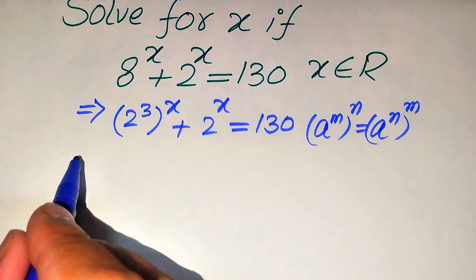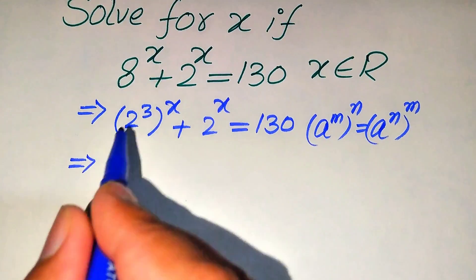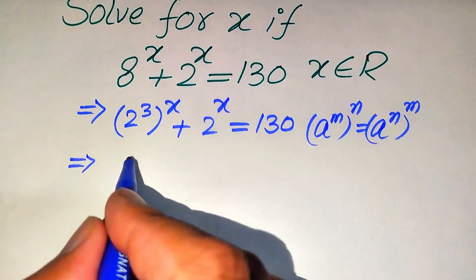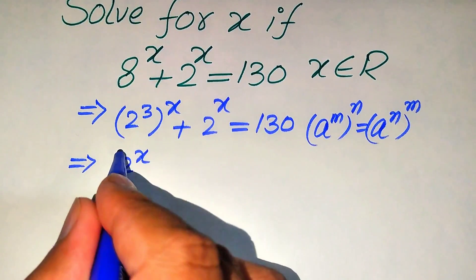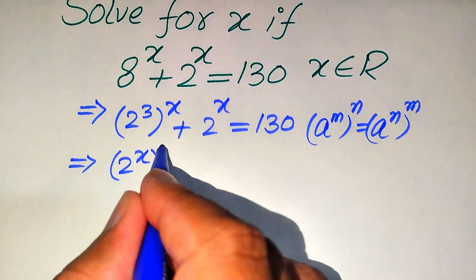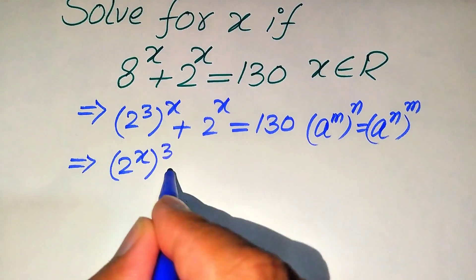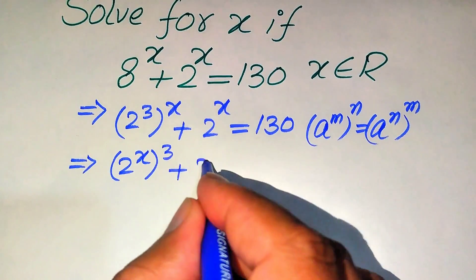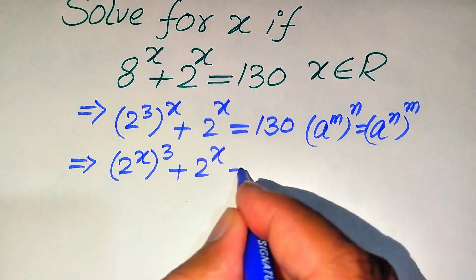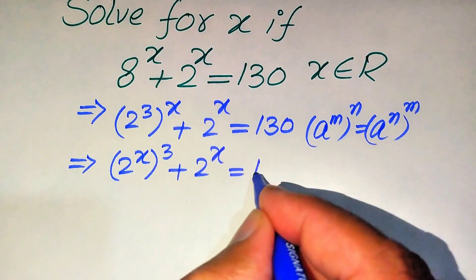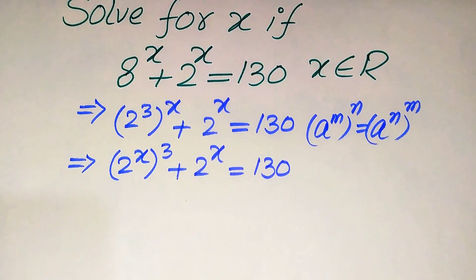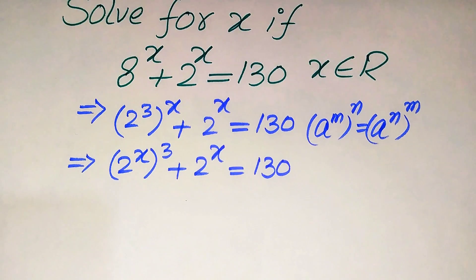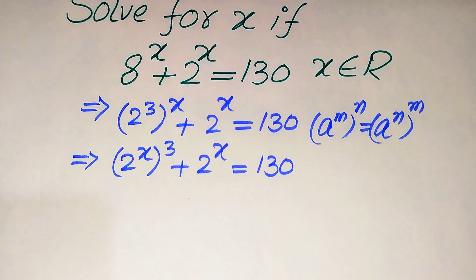So in this case we interchange the two exponents, and after interchanging them it will be written as 2 to the power of x, whole cubed, plus 2 to the power of x, equals 130.